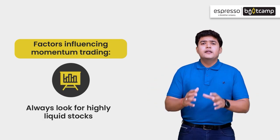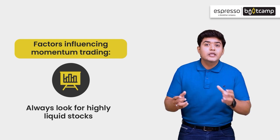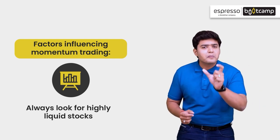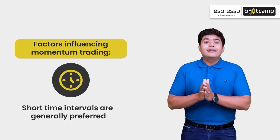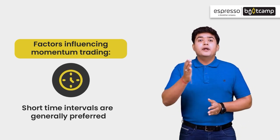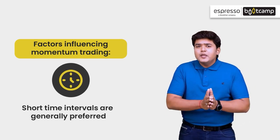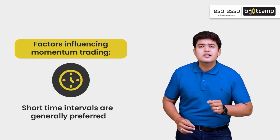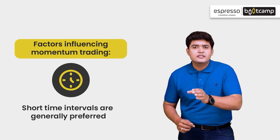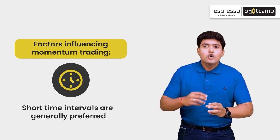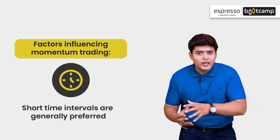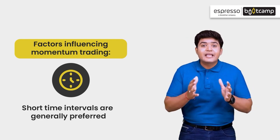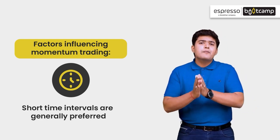Secondly, traders ke liye bhoot zyada zaruri hai ki woh aise stock ko choose karai jo market mein zyada kharida aur becha ja raha ho. And lastly, kyunki yeh strategy momentum par based hai, is mein time limit ka dhyan rakhna bhoot zaruri hai. In fact, scalp traders thode samay ke liye hi is strategy se kiye huwe trade mein rehte hai, aur jaisi hi price action weak honne laghe, woh trade ko exit kar lete hai. A scalp trade can be as short as a couple of seconds.